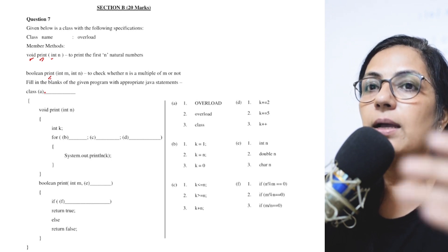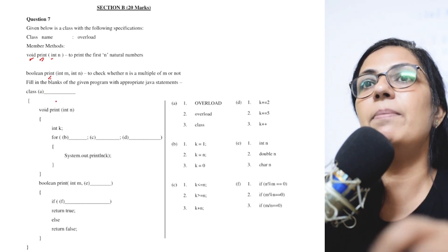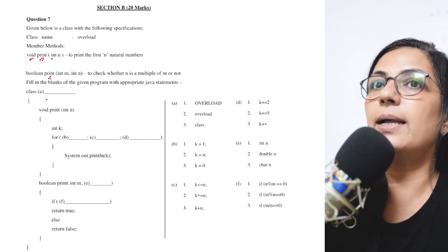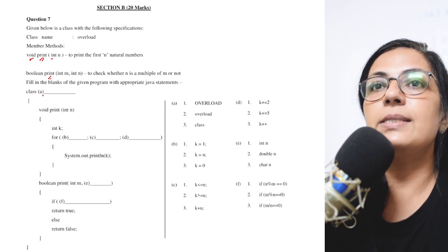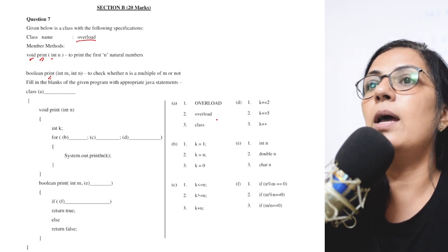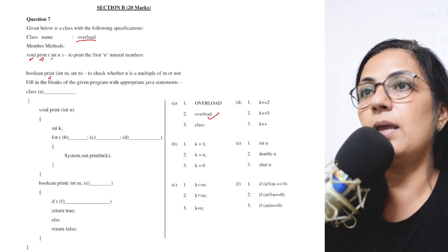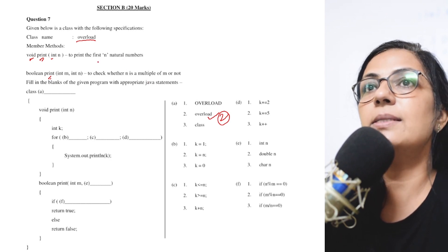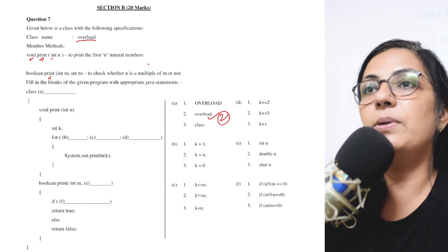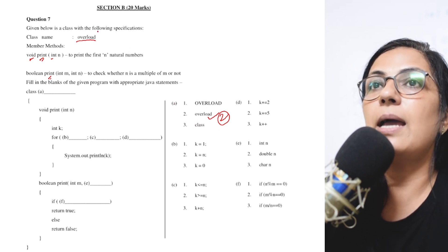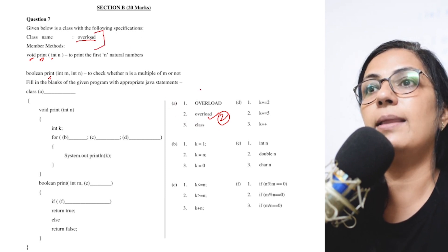For this question, you have the complete program written with a few blanks marked as A, B, C, D, and you have to choose the correct option for these blanks. Starting with blank A — the class name is already given in the question, it is 'overload'. Please note that Java is a case-sensitive language; lowercase and uppercase are treated differently. So it has to be the same name given in the question, and that is option 2.